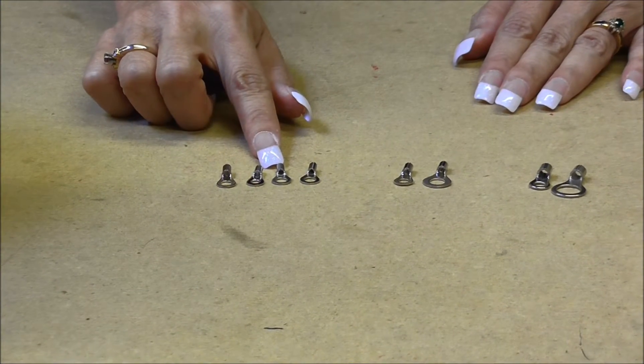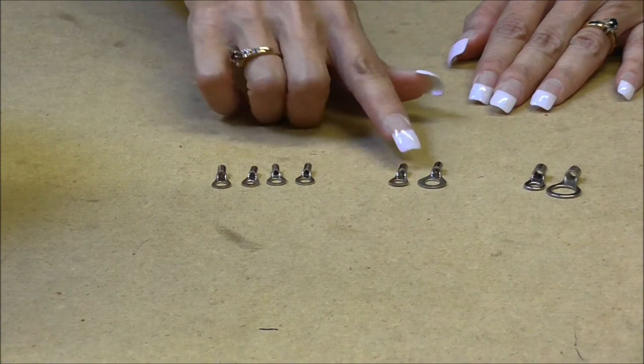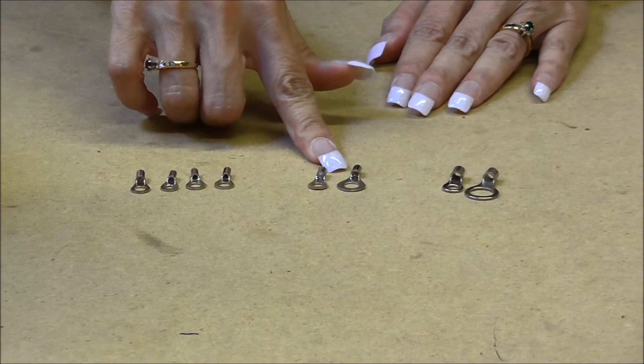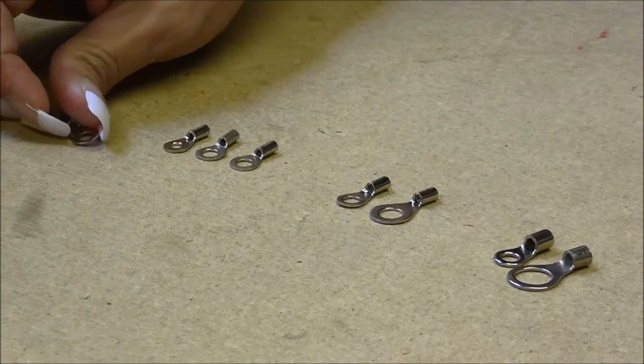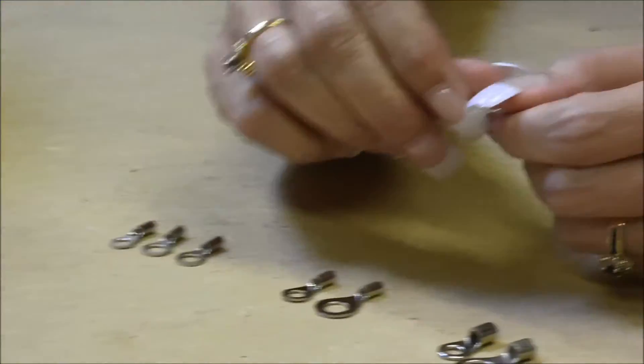These are the 22 to 18 gauge, these are the 16-14 gauge, and these are the 12-10 gauge. This is the one that I'm going to crimp today.